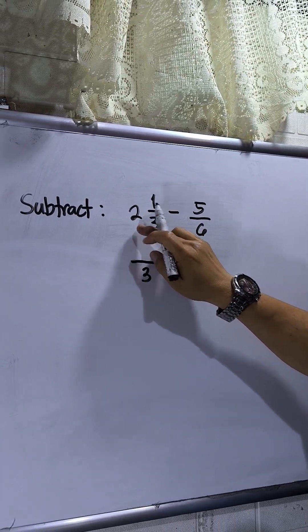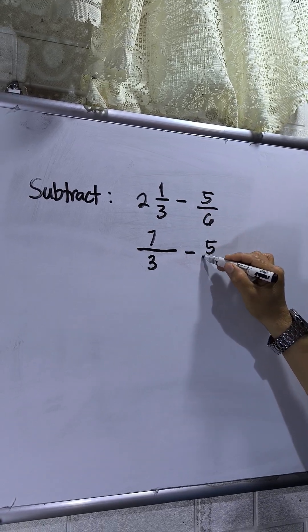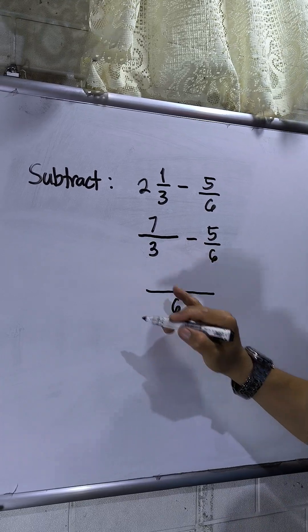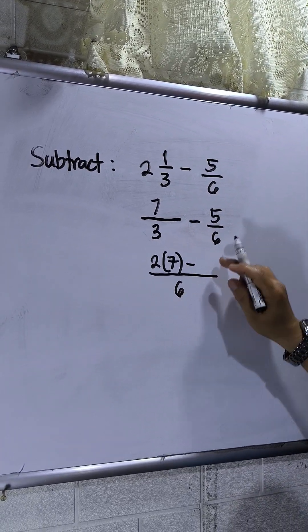So two times three, or three times two, that will be six plus one equals seven. So 7/3 minus 5/6. The LCD between six and three is six. Six divided by three is two times seven, minus six divided by six, which is one times five.